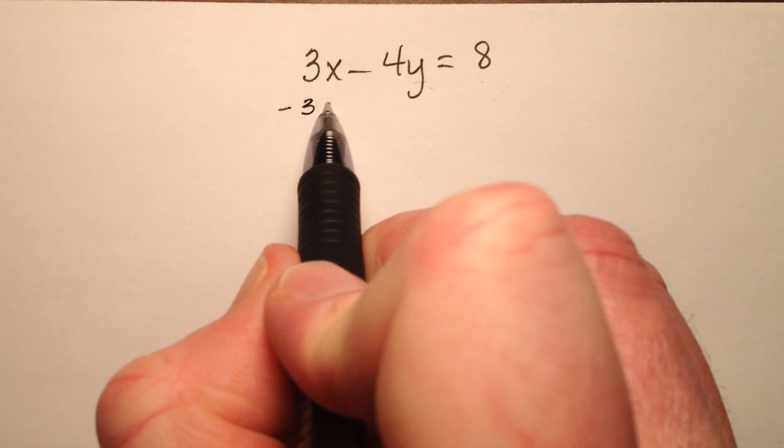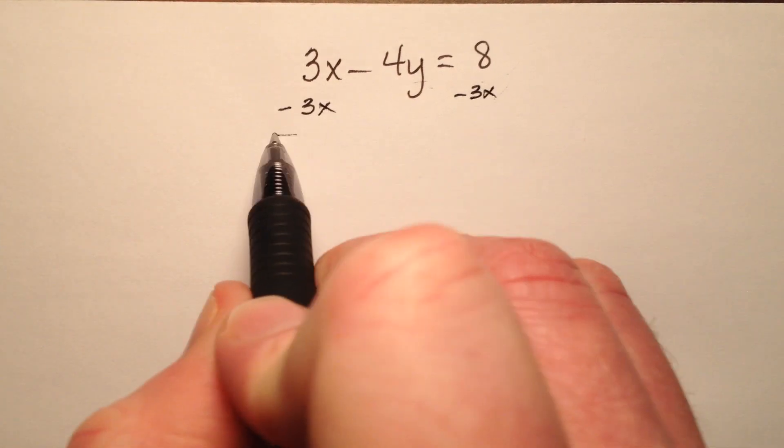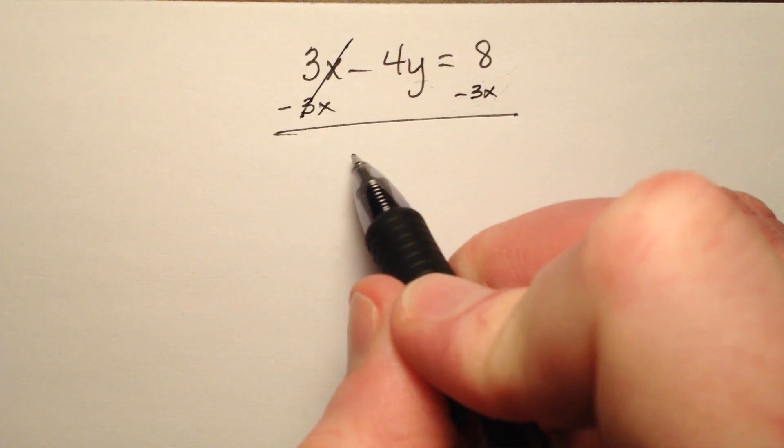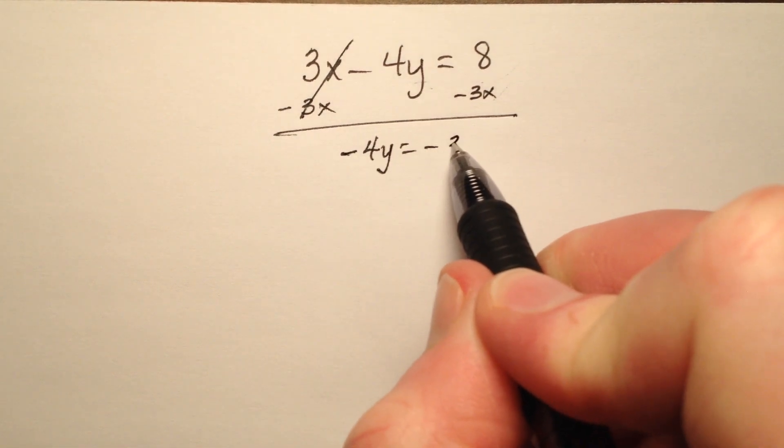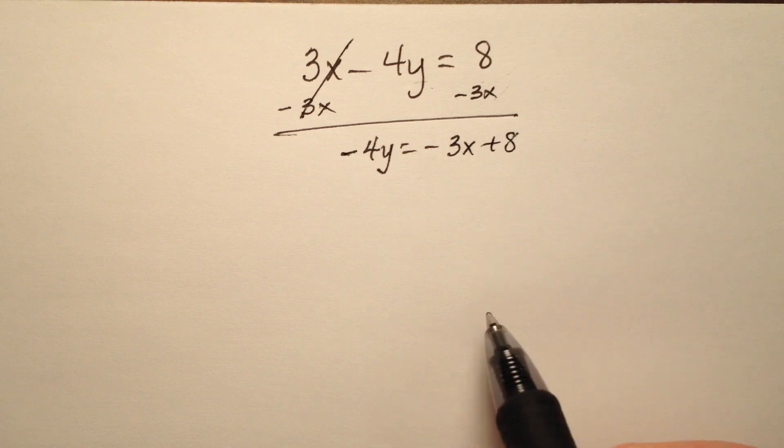So the first thing I'm going to do is subtract 3x from both sides. When I do that, I have negative 4y equals negative 3x plus 8.